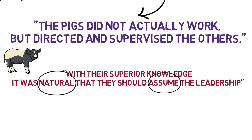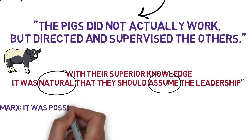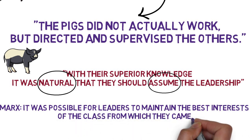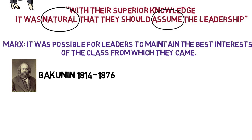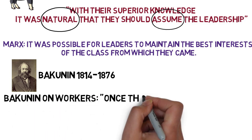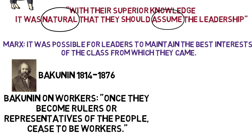Before we return to that, let's pause and consider Marx's views on leadership. Karl Marx believed it was possible for leaders to maintain the best interests of the class from which they came — that a working class person, a member of the proletariat, could still care about the working classes and lead in a way which preserved their interests. Bakunin was a Russian revolutionary and anarchist who believed it was not possible for workers to continue to represent the people once they had become leaders. Consider this in terms of Animal Farm: what is Orwell suggesting about leadership? Do you think the pigs really still represent the other animals, or have they just become self-serving?